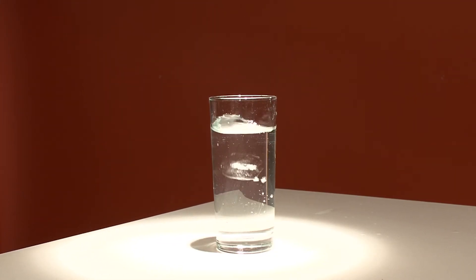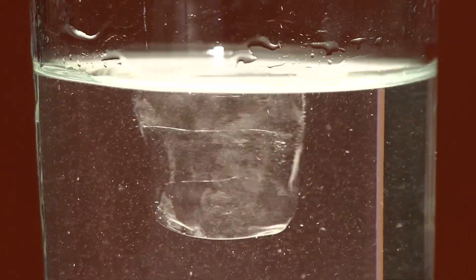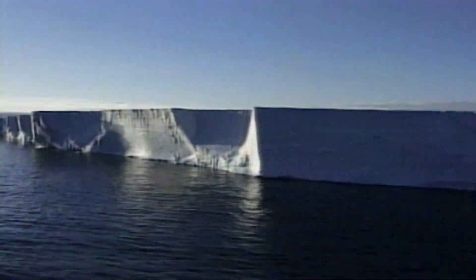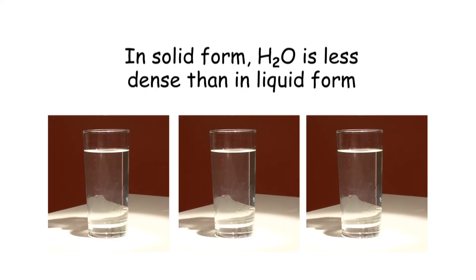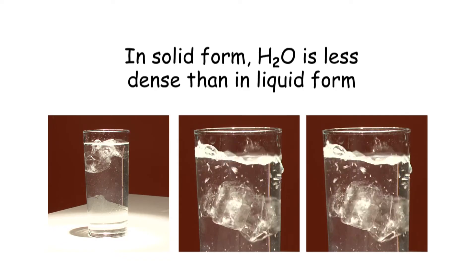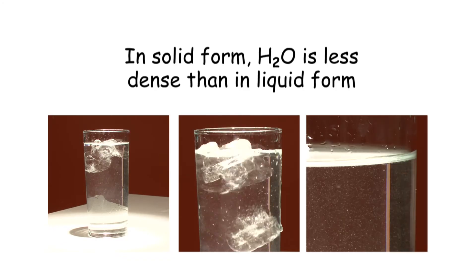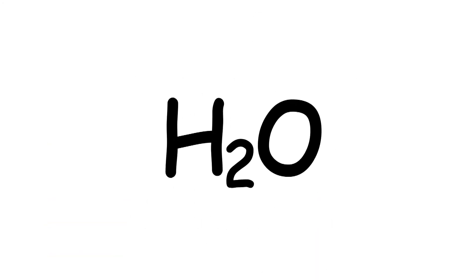But drop a piece of solid water — ice — into liquid water, and whether it's ice cubes in your water glass or icebergs in the Arctic, it floats. In solid form, H2O is less dense and lighter than the same amount of H2O in liquid form, because when water freezes, it doesn't contract.